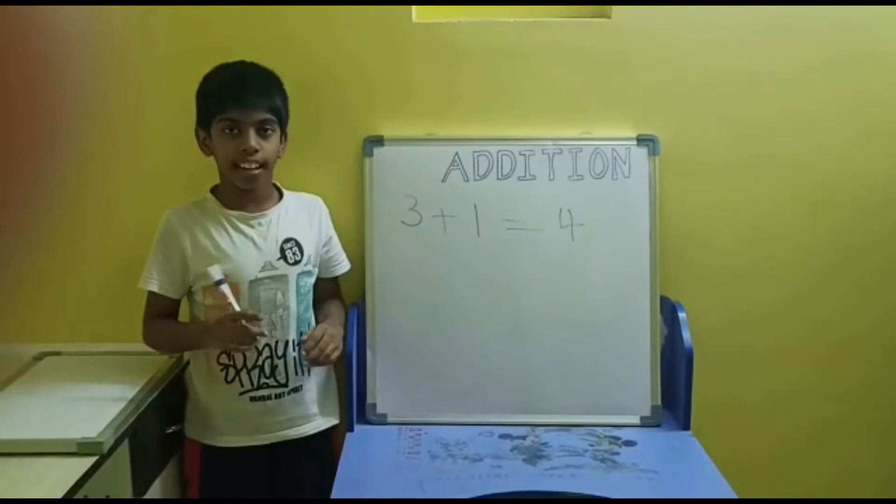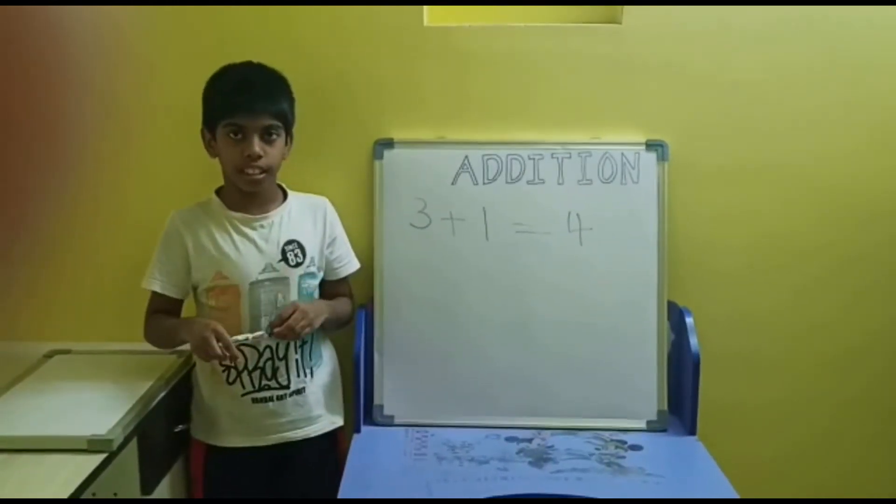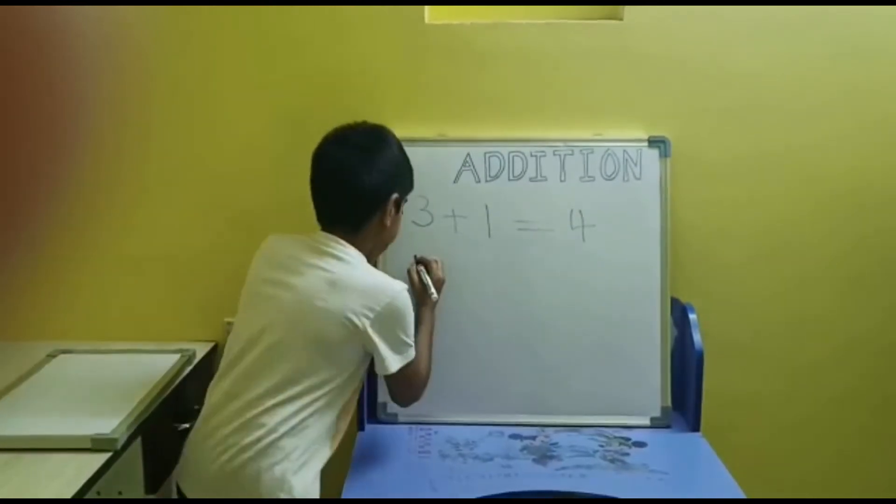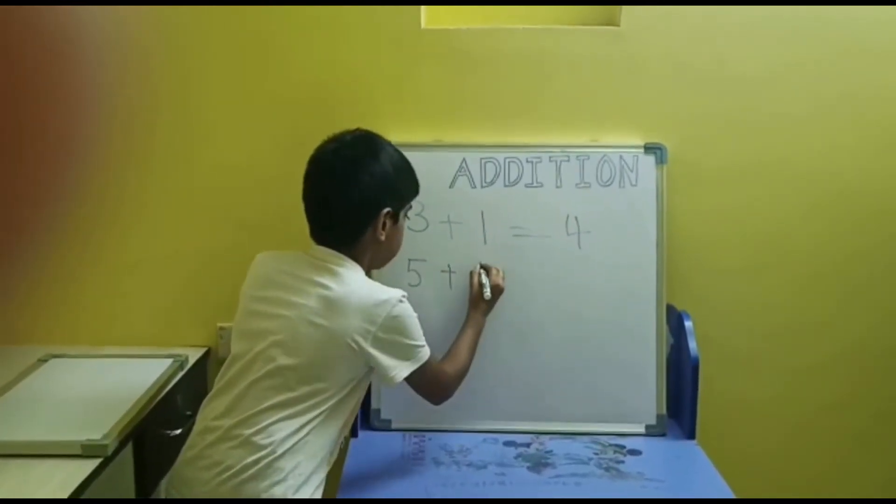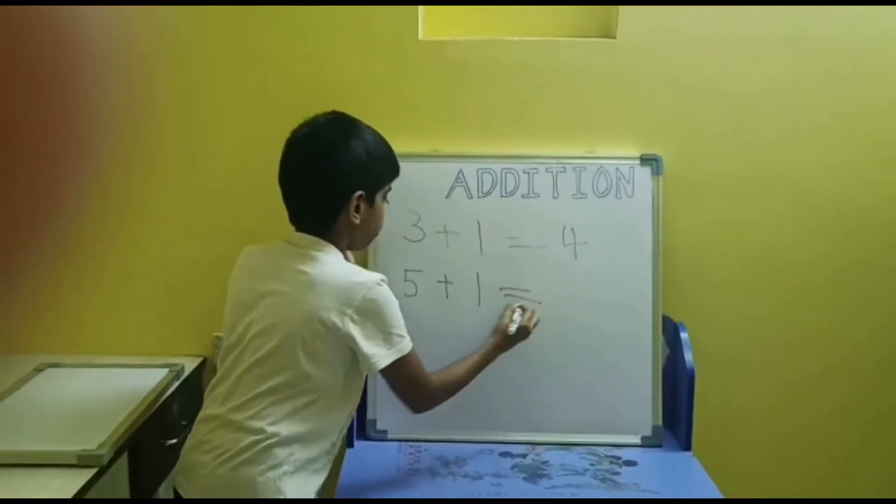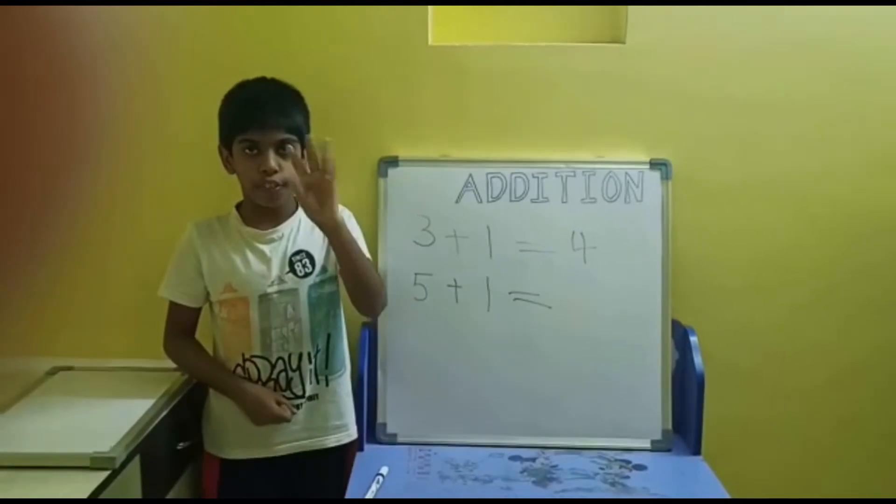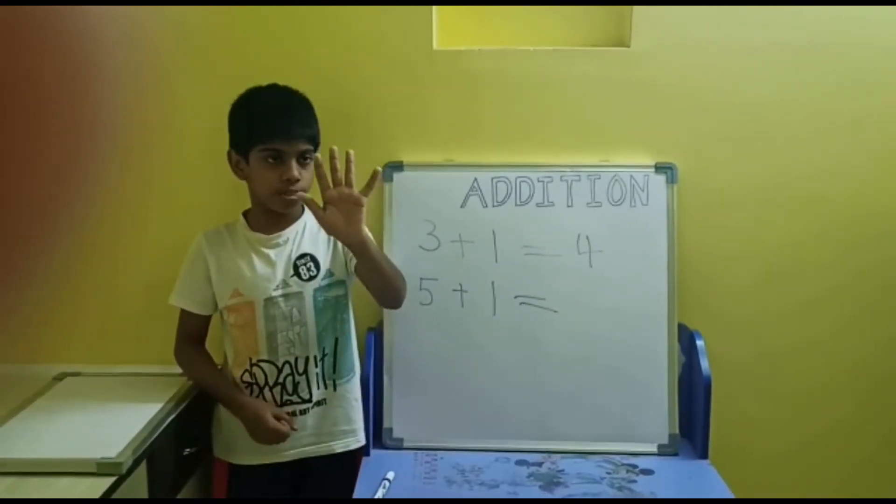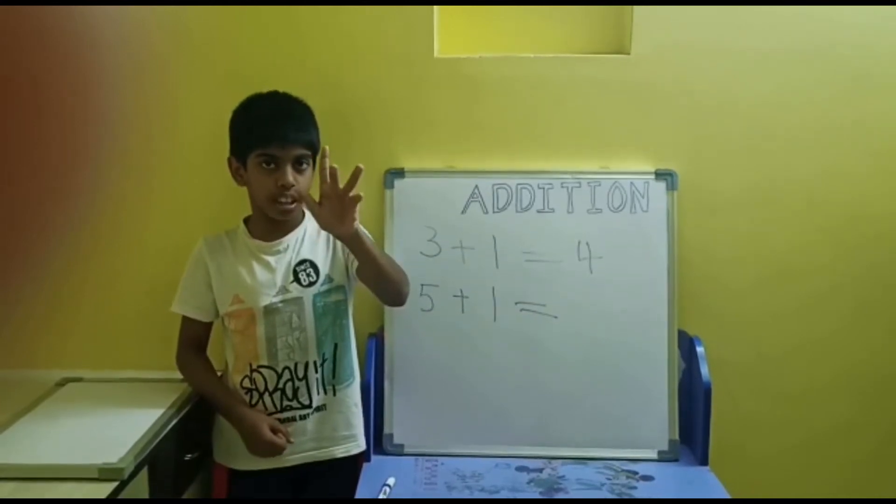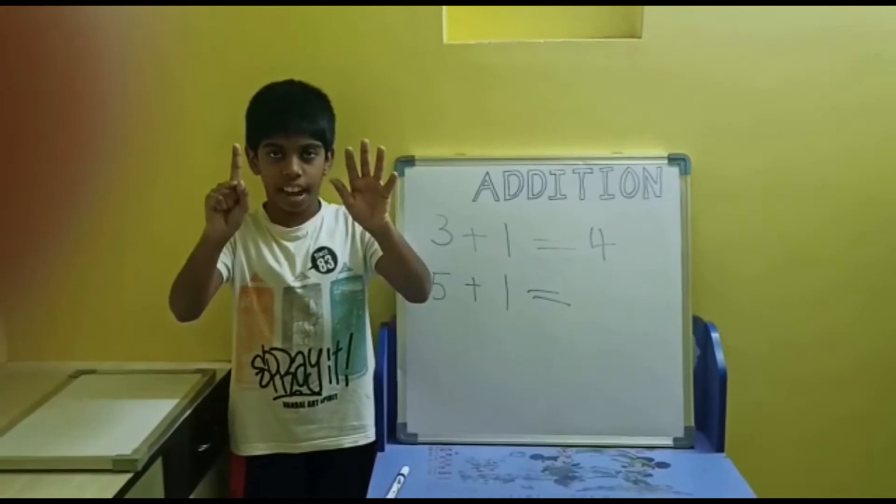Now let's see another method with fingers. Now the question is 5 + 1 equals to. Now we need to have five in the left hand. And we need to count one, two, three, four, five.